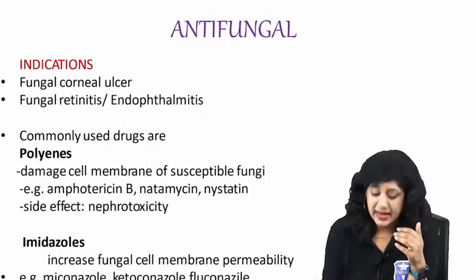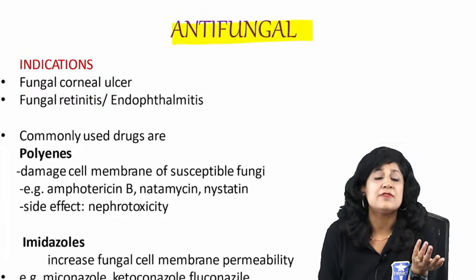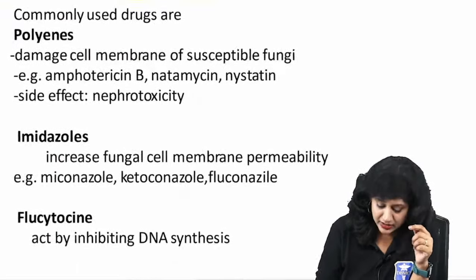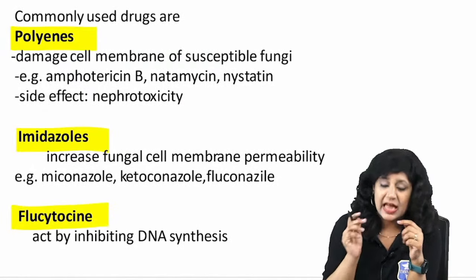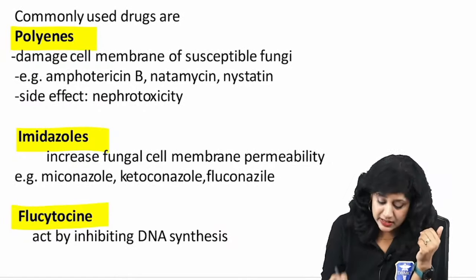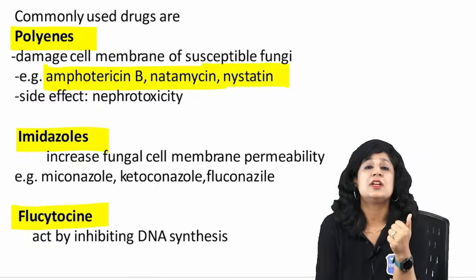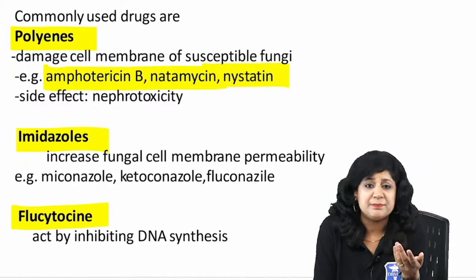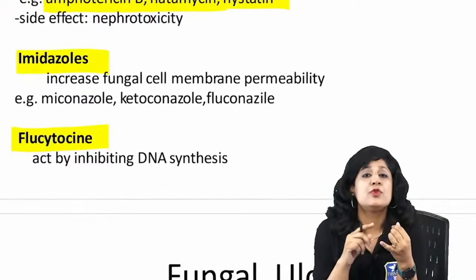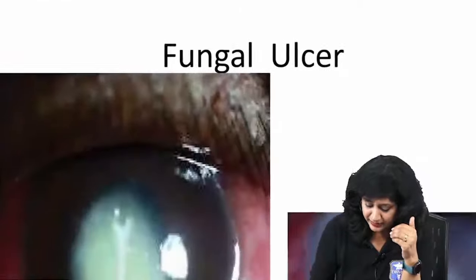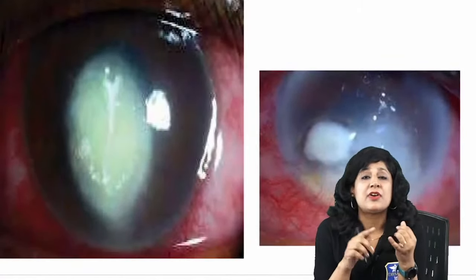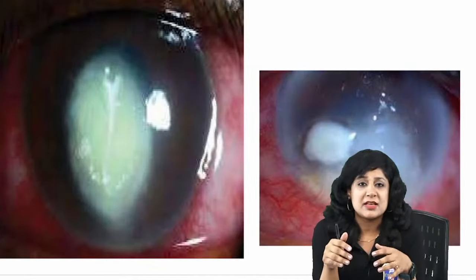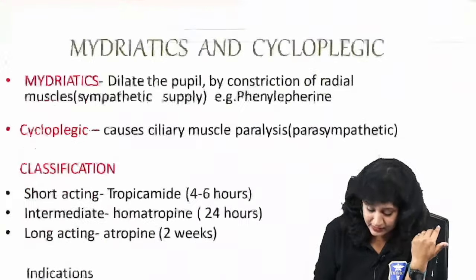Antifungals are used for fungal corneal ulcers, fungal retinitis, and endophthalmitis. Available classes include polyenes, imidazoles, and flucytosine. For filamentous fungi, the drug of choice is natamycin; for yeast-like fungi, amphotericin B with nystatin is used. Imidazoles include miconazole, ketoconazole, and fluconazole. A typical fungal corneal ulcer appears dry and grayish with elevated margins, finger-like projections, rolled-out edges, and multiple satellite lesions.